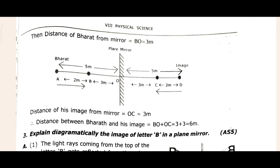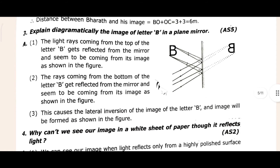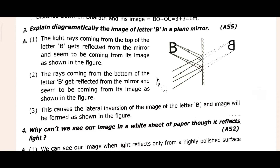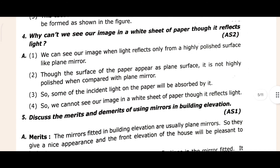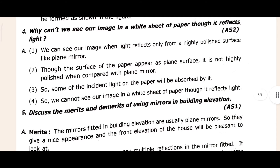If it is clear, come to the third question: explain diagrammatically the image of letter B in a plane mirror. That is given here. If it is complete, come to the fourth question and answer.